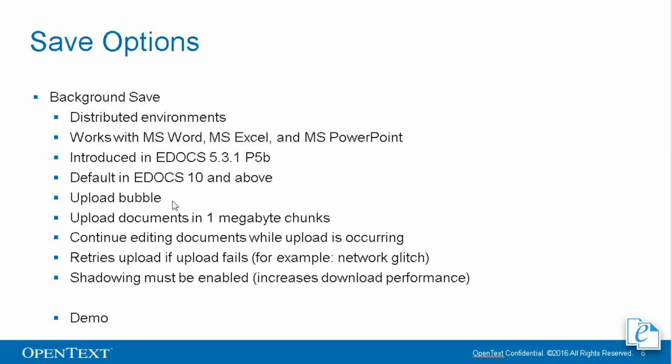One of the things we try to do is increase overall performance with DM 5.3.1 P5B and 10 by increasing performance not just on uploads but on downloads as well. That's where shadowing comes into play — on the downloads. When you're editing documents in eDocs and saving them, those changes go to your shadow as well, so that later when you open that document from eDocs, you get the shadow document without going across the wire, and latency and performance is greatly increased. Let's go through a demo of background save.